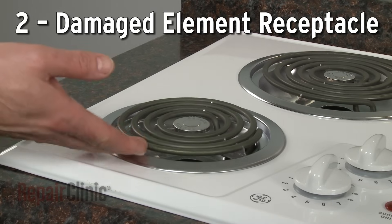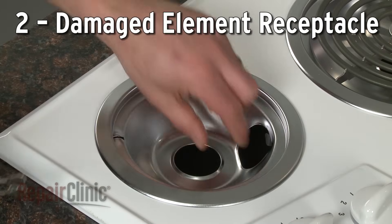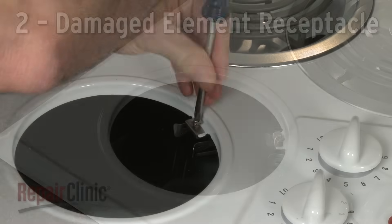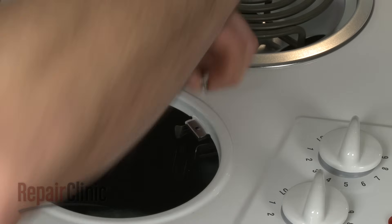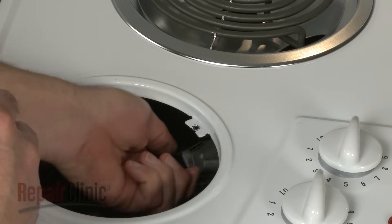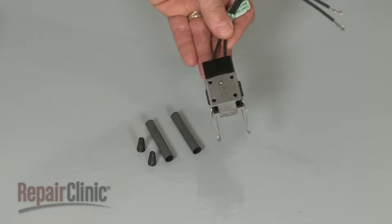Over time, the contacts in the element receptacle can burn out, which will interrupt the voltage being sent to a conventional coil element. If the contacts are visibly burnt or damaged, you should replace the receptacle with a new one.